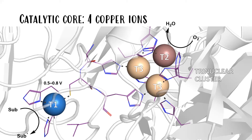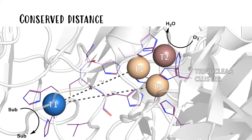The Type 2 and Type 3 coppers form a trinuclear cluster coordinated by several histidines, and this is the site where molecular oxygen is reduced to water. The architecture of the site is conserved, and the distance between the Type 1 copper and the trinuclear cluster is always around 12 angstroms.